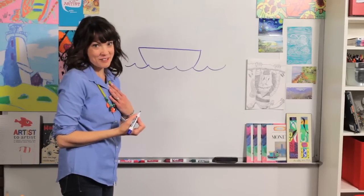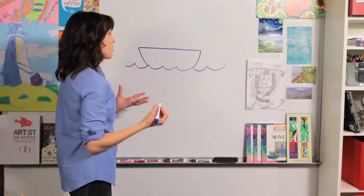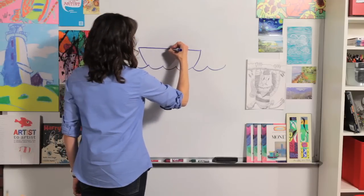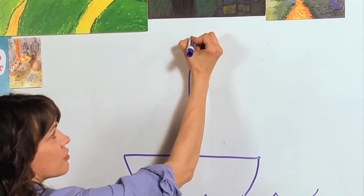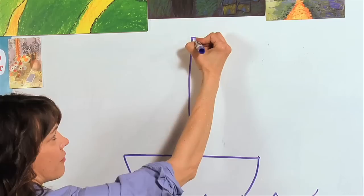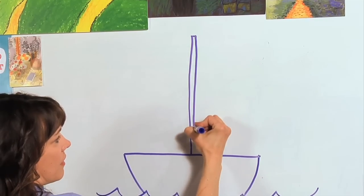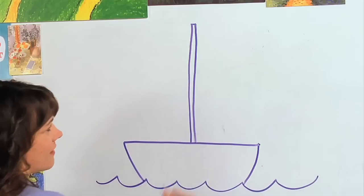Now because my dad is a sailor, I've got to teach you how to draw a sailboat. We need a mast and that is a long pole that goes right up in the middle. So draw a straight line up high, a little short line across, and a straight line right back down.